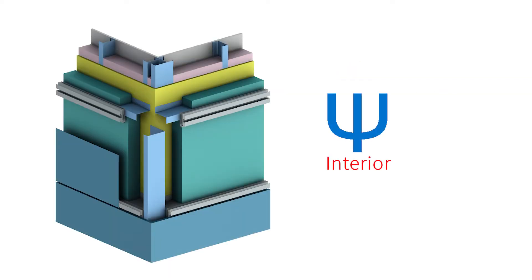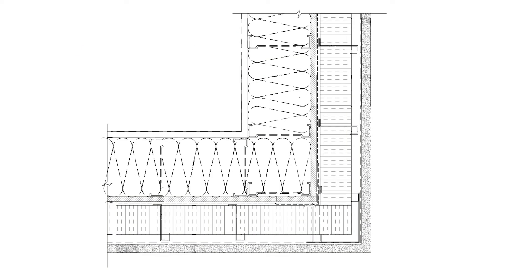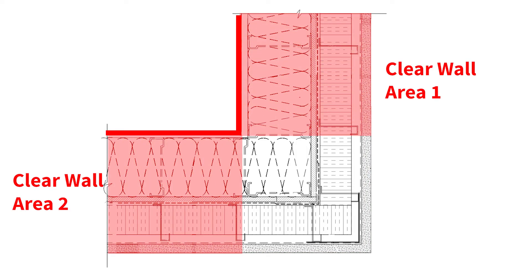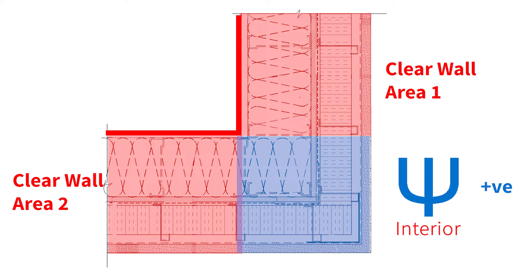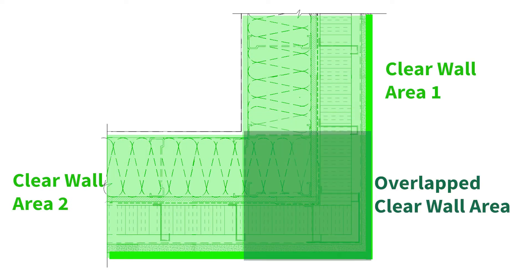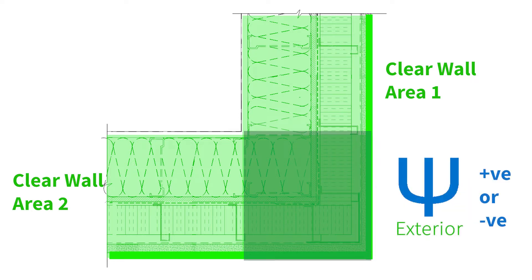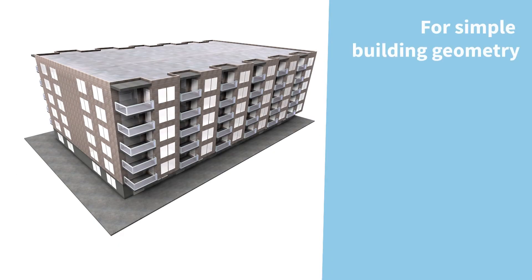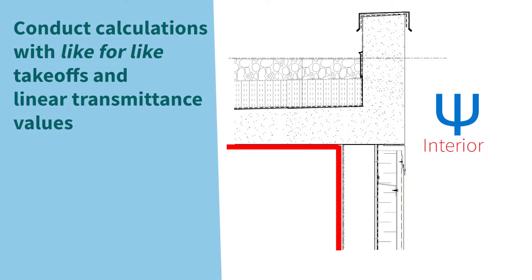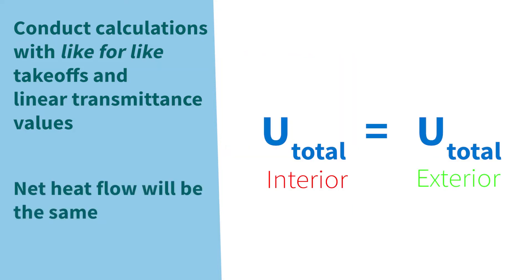The linear transmittance can be interior or exterior based. For instance, at an outside corner, the exterior length is longer than the interior length. If interior dimensions are used, the clear-filled area will account for the heat loss up to the corner but not include any part of the corner, resulting in a positive linear transmittance to account for the entire heat flow from the corner. If the exterior dimension is used, then the area of the clear-filled overlaps over the corner, resulting in a larger clear-filled heat flow in calculations. In this case, the corner linear transmittance doesn't need to include as much additional heat flow and would be lower — in some cases, it can even be negative if the corner detailing is really good. For most buildings without many geometric thermal bridges, the impact of exterior versus interior is minor. As long as interior takeoffs are used with interior transmittances and exterior with exterior, the net amount of heat flow is still the same.